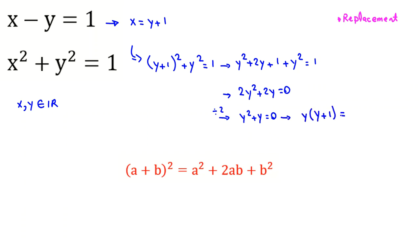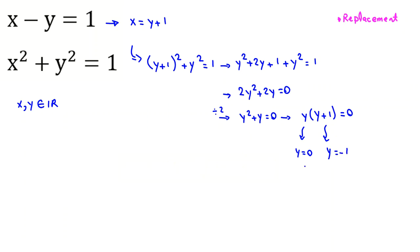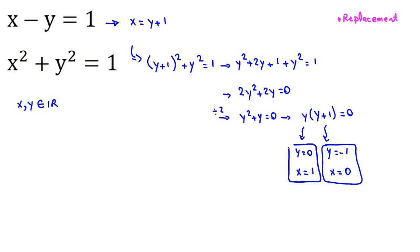Factoring y from y squared plus y equals 0 gives y times y plus 1 equals 0, so y equals 0 or y equals negative 1. Since x equals y plus 1, when y equals 0 we get x equals 1, and when y equals negative 1 we get x equals 0. Checking both pairs in the original equations confirms they satisfy x minus y equals 1 and x squared plus y squared equals 1.